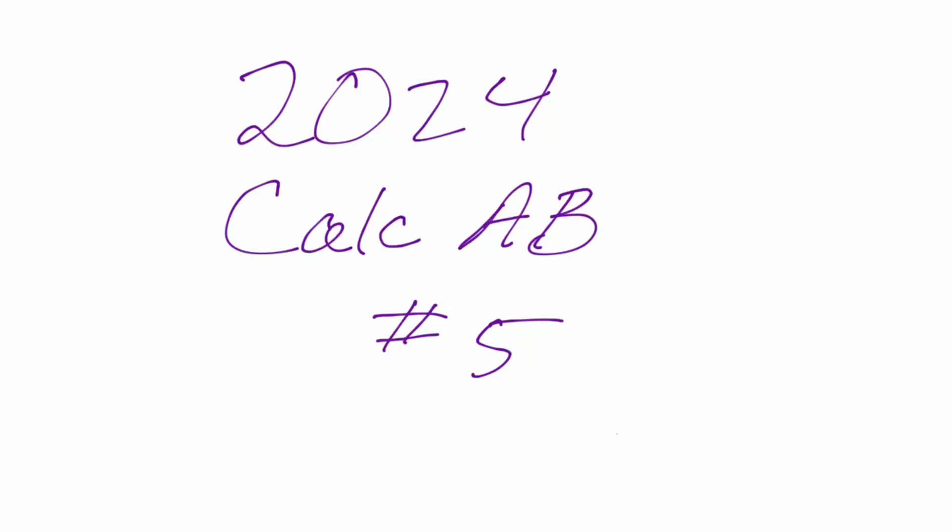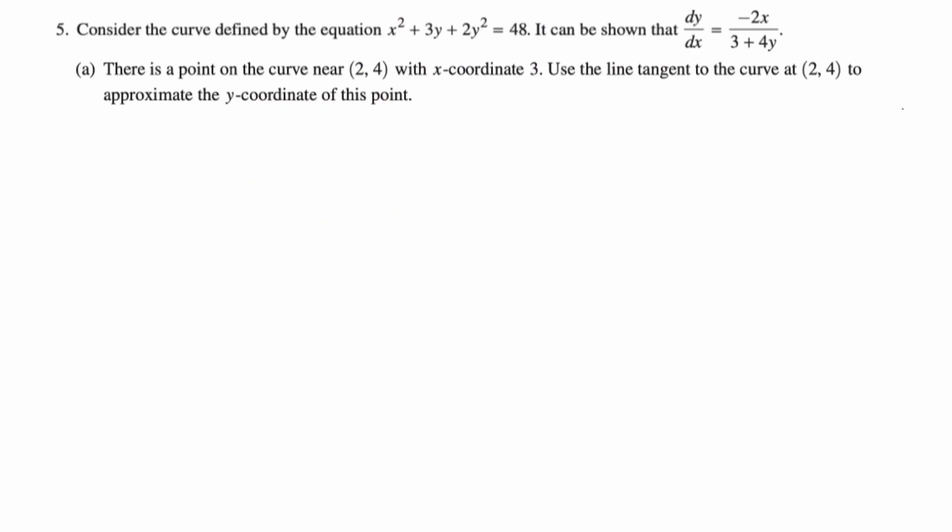Okay, in this video, we're going to be doing number 5 from the 2024 Calc AB exam. Let's take a look. Consider the curve defined by the equation x squared plus 3y plus 2y squared equals 48. It can be shown that dy/dx is negative 2x over 3 plus 4y, but we don't have to do that. They gave it to us.